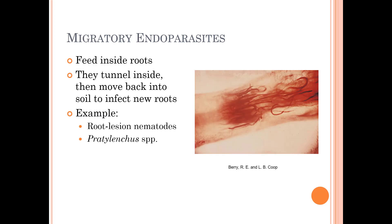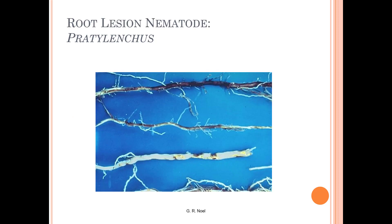Migratory endoparasites feed on the inside of the roots. They tunnel inside, then move back into the soil to infect new roots — so they go in and out. One example of this is root lesion nematodes, pictured here on corn roots.